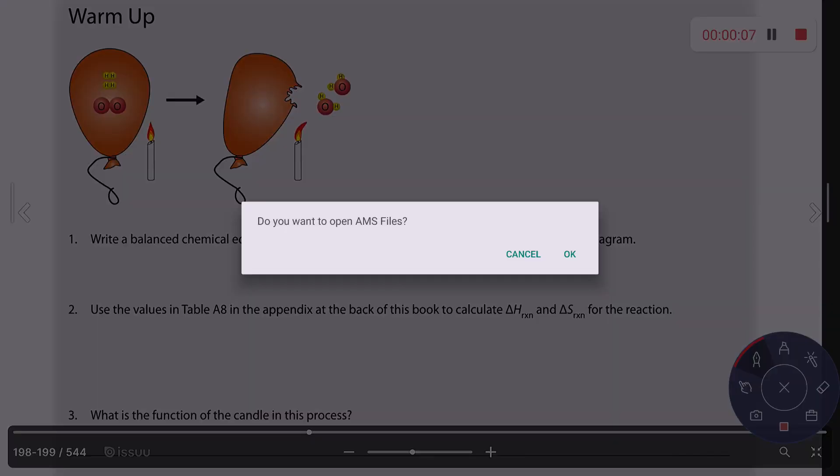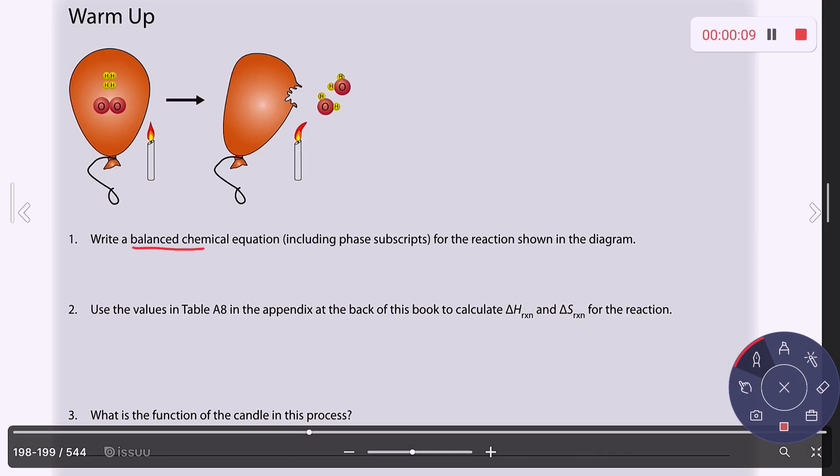Okay, we're going to write a balanced chemical equation including the states of matter for the reaction shown in the diagram. We've got two hydrogen gas molecules, one oxygen gas, and we're producing two water vapor.